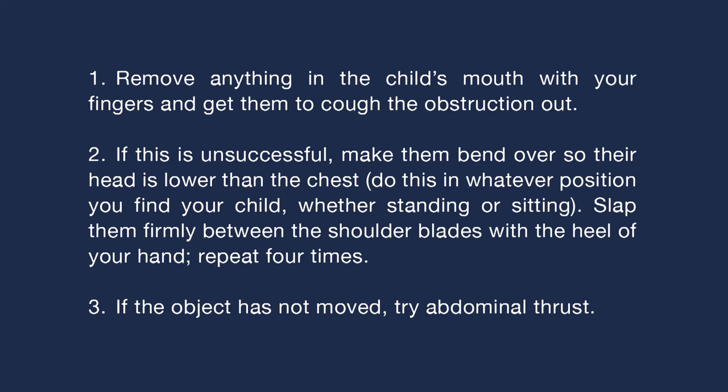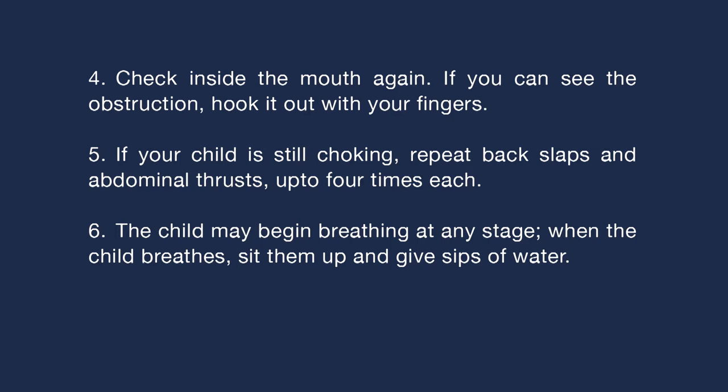Remove anything in the child's mouth with your fingers and get them to cough the obstruction out. If this is unsuccessful, make them bend over so their head is lower than the chest and slap them firmly between the shoulder blades with the heel of your hand — repeat four times. If the object has not moved, try abdominal thrust. If you can see the obstruction, hook it out with your fingers. Repeat back slaps and abdominal thrusts up to four times each. When the child breathes, sit them up and give sips of water.